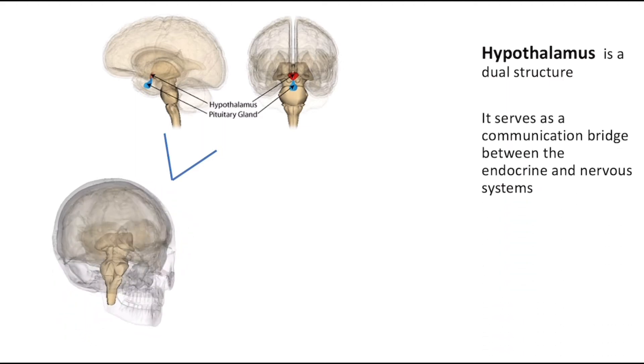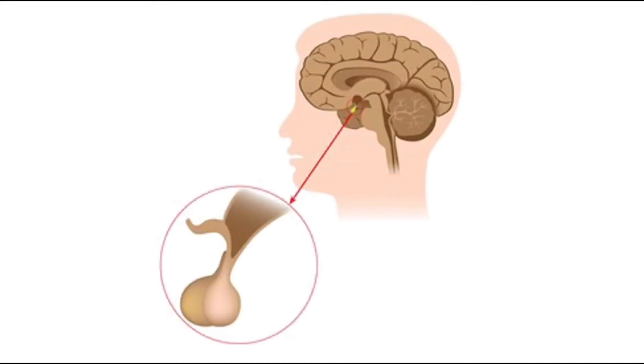The hypothalamus receives input from a variety of sources, stimulated by a variety of stimuli and in return it releases a variety of hormones. Five of these hormones are secreted into the hypophysial portal system, a capillary system that connects the hypothalamus and anterior pituitary gland.